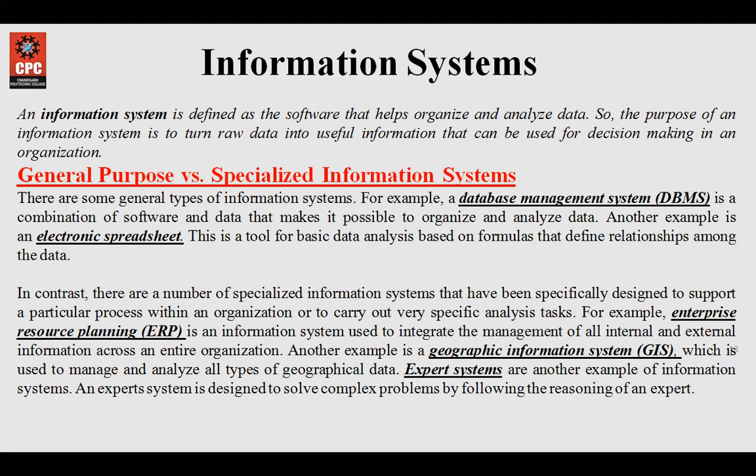Defining an information system in broader terms: it is basically an organized collection of people, hardware resources, software resources, data resources, and a communication network that is used to collect, transform and circulate information in any organization. The different resources of an information system are people, hardware resources, software resources, data resources, and network resources.